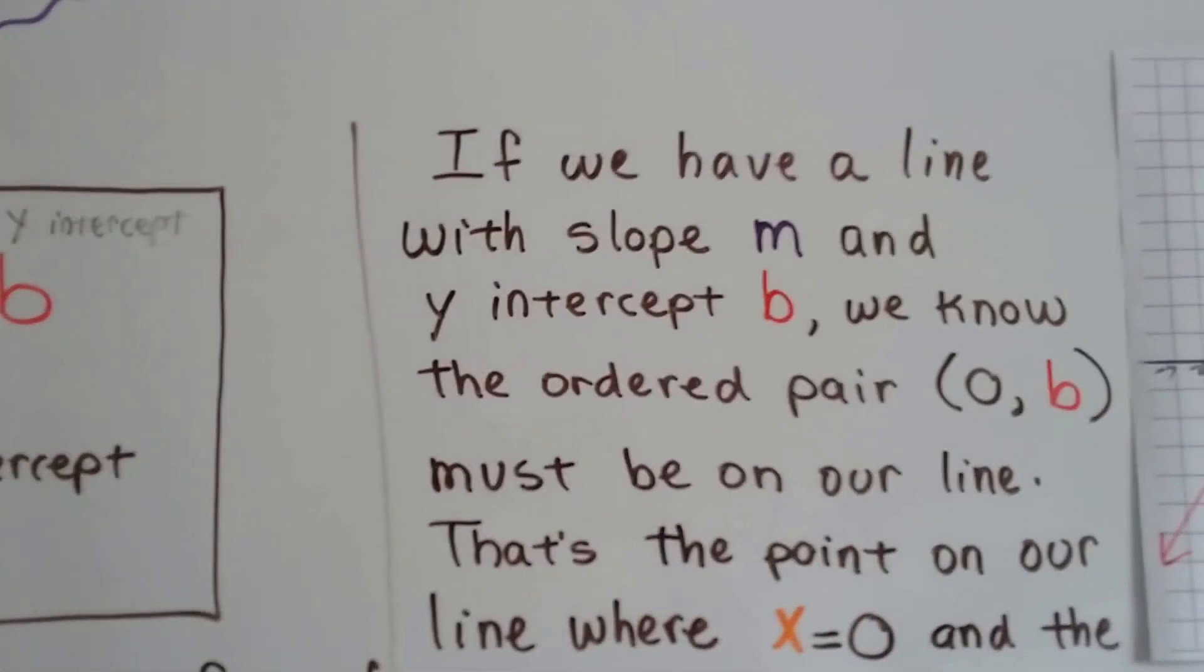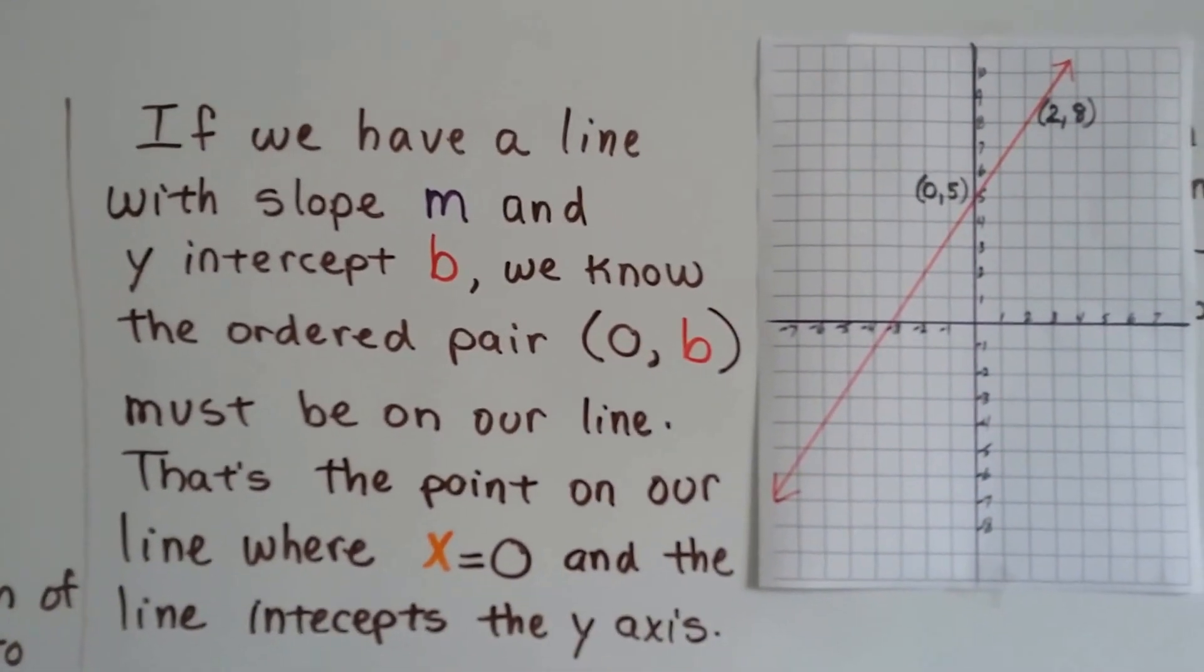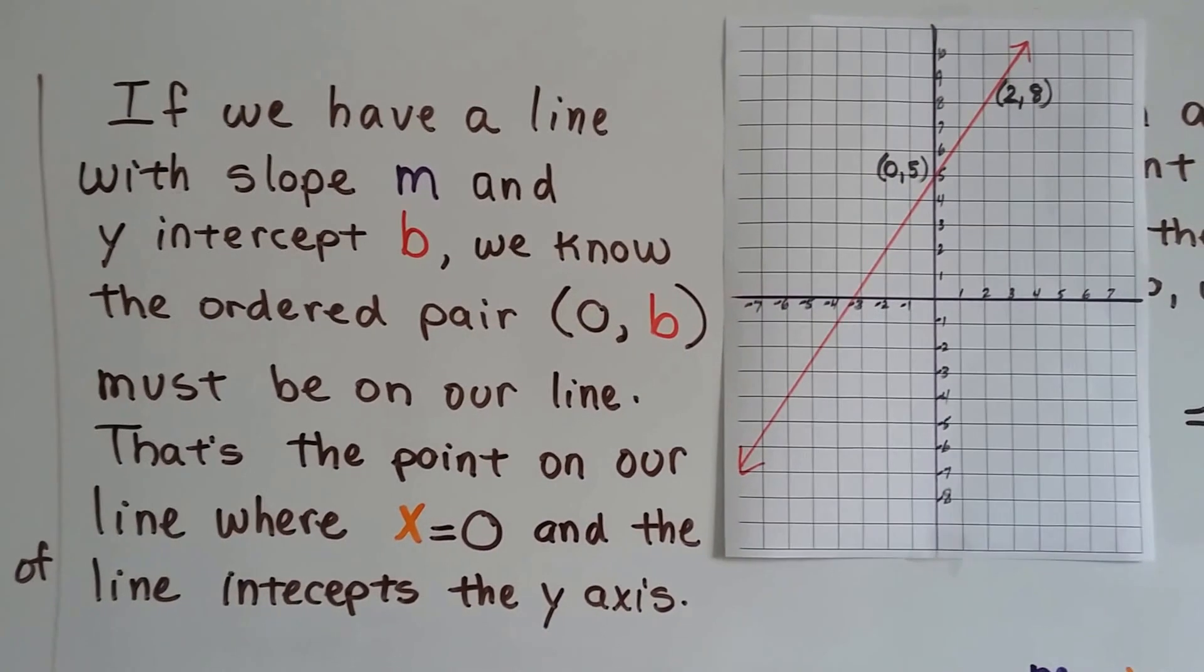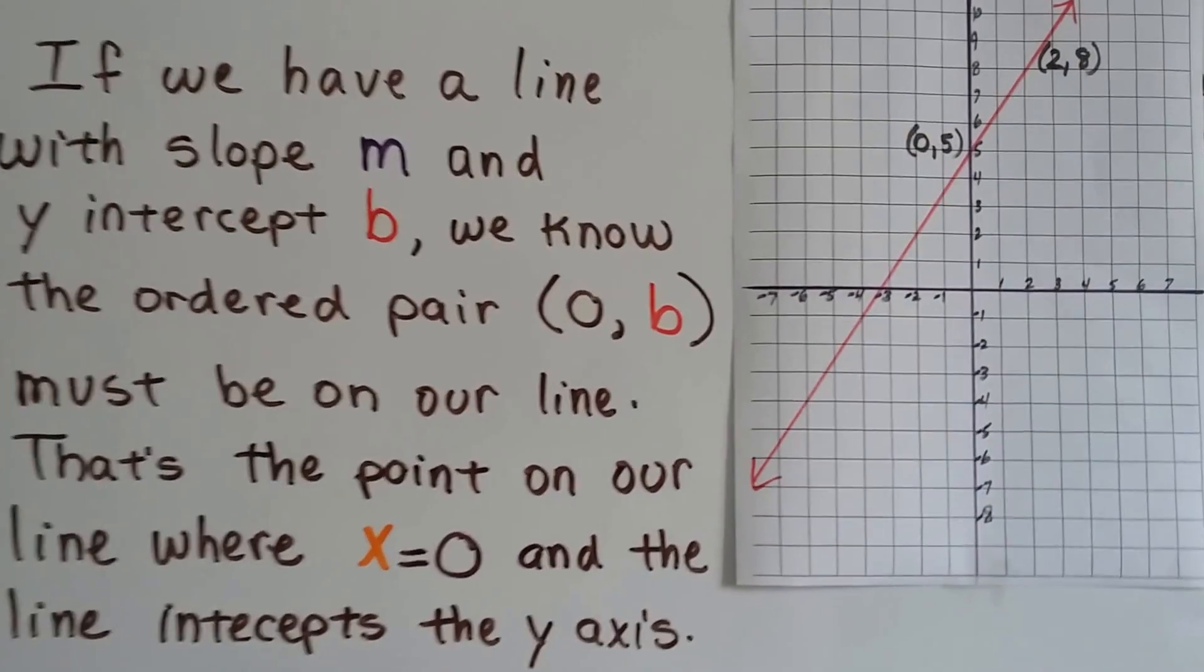If we have a line with slope m and y-intercept b, we know the ordered pair (0, b) must be on our line. That's the point where our line intercepts the y-axis, where x equals 0.